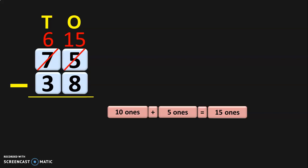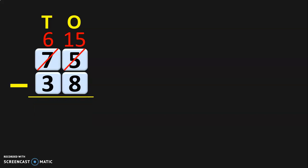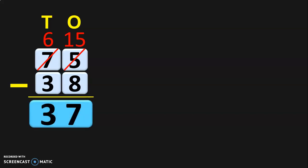Now it is easy to subtract fifteen minus eight in the ones place. What is fifteen minus eight? You will get seven. Next, move on to the tens place where you have six minus three. Six minus three is three. So the subtraction of the two two-digit numbers, 75 minus 38, will give you the answer 37.